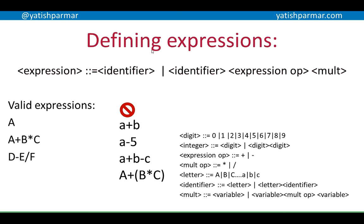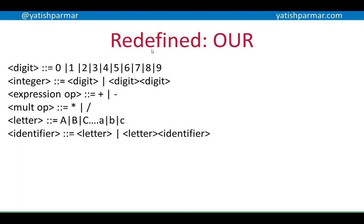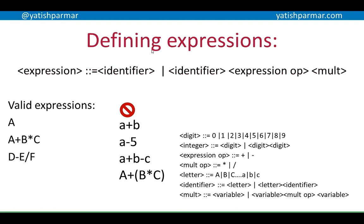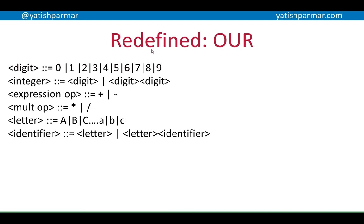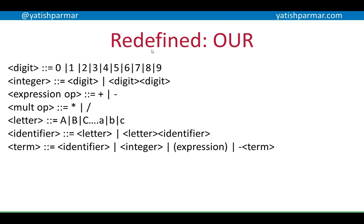So how can I refine this set of rules further? I need to redefine my expression to allow not just mult, but any term — a variable, a constant, another expression, or a multiplication. I'm going to create something called a 'term'. Term is defined by: it could be an identifier, it could be an integer, it could be an expression in brackets, or it could be a negative term — so there's a recursive definition again, allowing something like minus five. I'll then redefine mult as: term, or term mult-op mult.